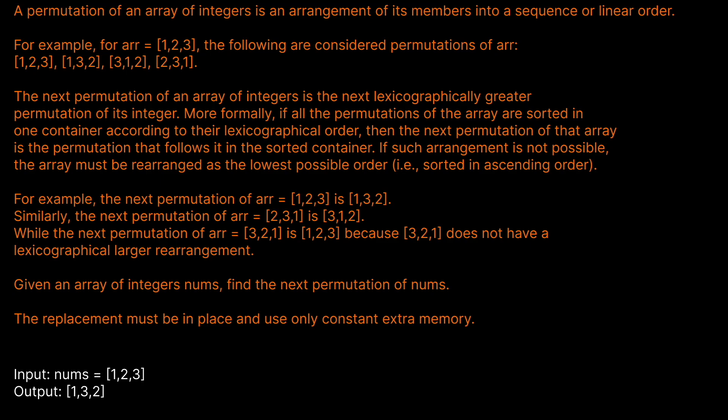For example, the next permutation of 1,2,3 is 1,3,2. Similarly, the next permutation of array 3,2,1 is 3,1,2. While the next permutation of 3,2,1 is 1,2,3 because 3,2,1 does not have a lexicographically larger rearrangement. Given an array of integers nums, find the next permutation of nums. The replacement must be in place and use only constant extra memory.